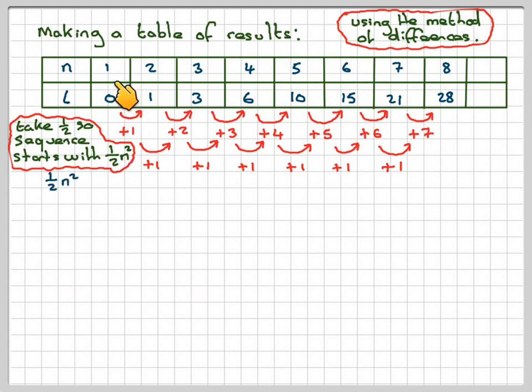Now, if we work out a half n squared, so 1 squared is 1 times a half is a half. 2 squared is 4, divided by 2 is 2. 3 squared is 9, divided by 2 gives me 4.5. 4 squared is 16, divided by 2, which gives me 8. 5 squared is 25, divided by 2 is 12.5. 6 squared is 36, divided by 2, which gives me 18. 7 squared is 49, divided by 2 gives me 24.5. 8 squared is 64, divided by 2, which is 32.